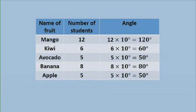For Mango, 12 times 10 degrees gives 120 degrees. For Kiwi, 6 times 10 degrees is 60 degrees. Avocado, 5 times 10 degrees is 50 degrees. For Banana, 8 times 10 degrees is 80 degrees. And for Apple, 5 times 10 degrees is 50 degrees. We are now going to use this information to construct our pie chart.